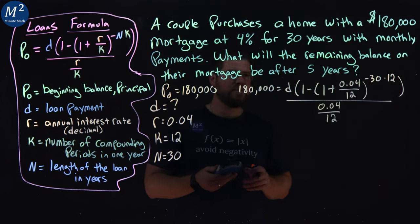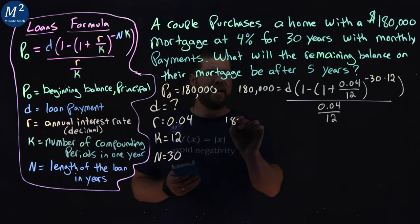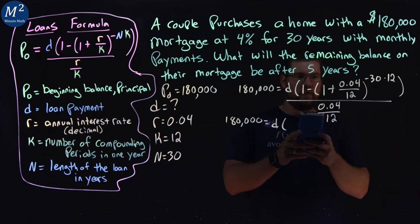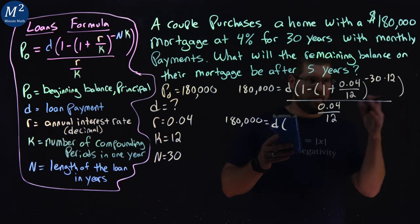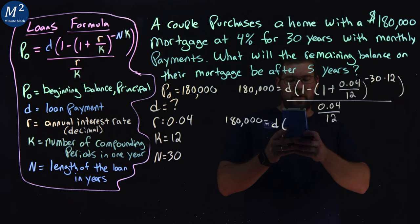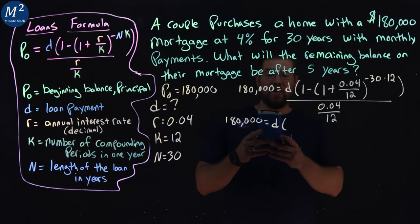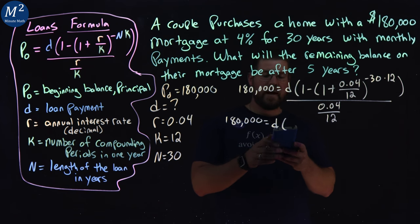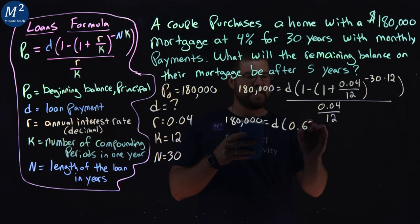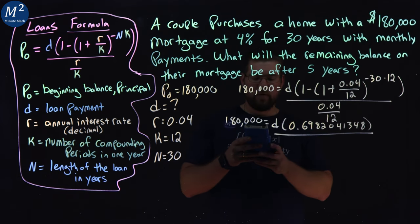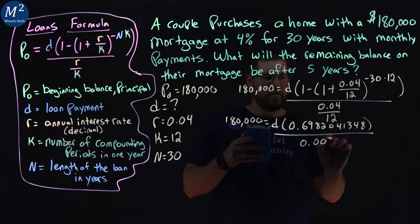And then from there, I'm going to use my calculator to break this down, simplify it where I can. So, we have 180,000 equals a D value. I'm going to kind of do all this at once, but I'll say it out verbally. 0.04 divided by 12 is 0.003 repeating. We add 1 to that, and then we raise it to the power of, or adding 1, which is 1.003 repeating, raise it to the power of negative 30 times 12, and make sure that exponent is in parentheses in your calculator there. That's going to help you. You should get 0.301795, and we do 1 minus that number, and we get 0.6982041348. That's going to be all over this 0.04 divided by 12, which is 0.003 repeating.